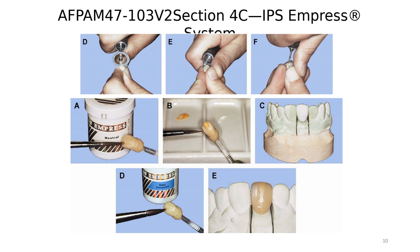We can use what's called a conditioner or lining for applying internal stain. However, since materials today come in different shades that can be matched with the layering porcelain, this lining procedure is often not necessary.